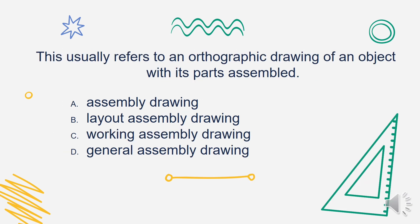This usually refers to an orthographic drawing of an object with its parts assembled. Is it A. Assembly Drawing, B. Layout Assembly Drawing, C. Working Assembly Drawing, or D. General Assembly Drawing? The answer is Letter D. General Assembly Drawing.